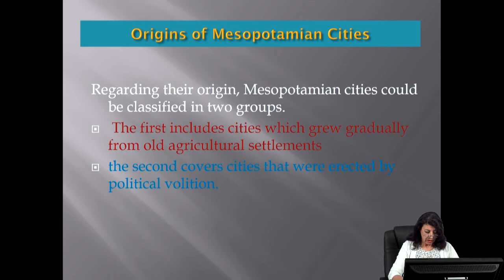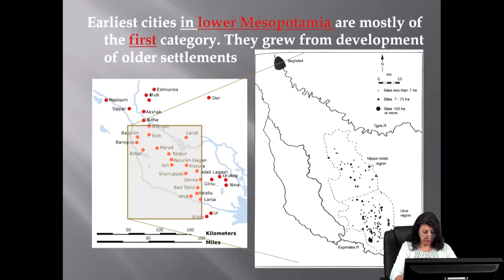Regarding the origins of Mesopotamian cities, they could be classified into two groups. The first includes cities which grew gradually from old agricultural settlements. The second covers cities that were erected by political volition. The earliest cities in Lower Mesopotamia are mostly of the first category. They grew from development of older settlements in Neolithic or Chalcolithic prehistory, in the sixth millennium BCE or earlier.